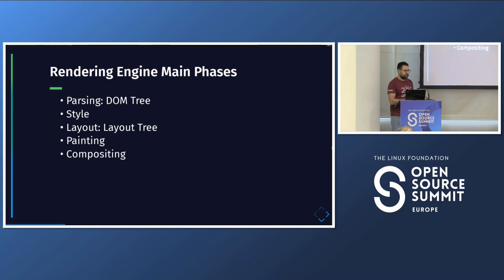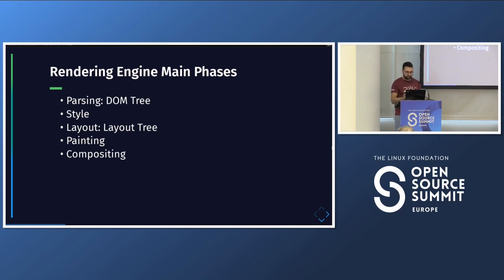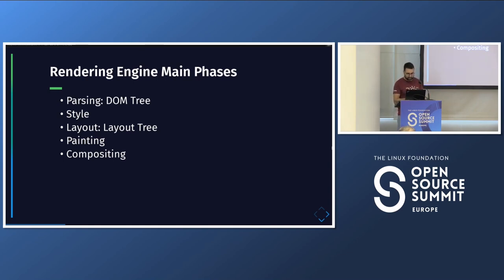A web rendering engine has a bunch of phases. First there is a parsing phase where it takes the HTML, parses it, and creates the DOM tree. It also parses CSS, and then there is the style phase where it matches CSS style rules with each of the DOM elements. Then there is a layout phase where you compute the position and size of each element — not easy, quite tricky. Then painting, where elements are prepared to be painted on the screen in layers. Finally, compositing sends everything to the GPU and paints it on screen, allowing faster scrolling without repainting the whole thing.